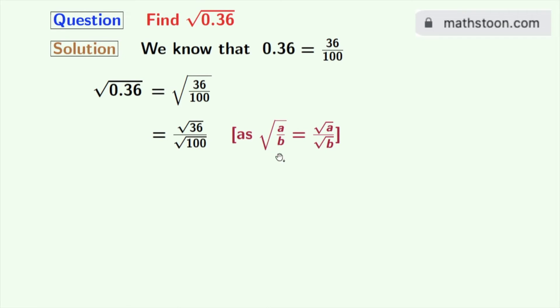Here a is 36 and b is 100. We all know that square root of 36 is equal to 6 and square root of 100 is equal to 10. So from this we get 6 by 10.